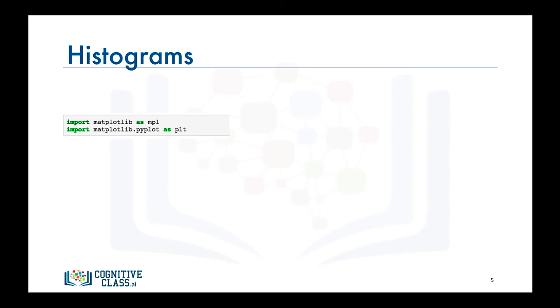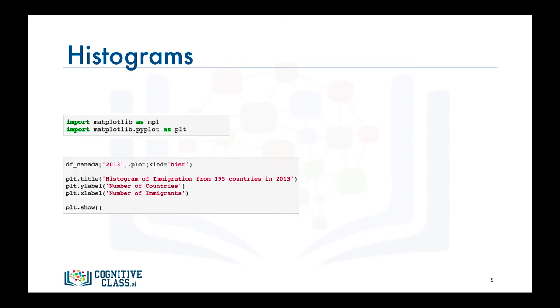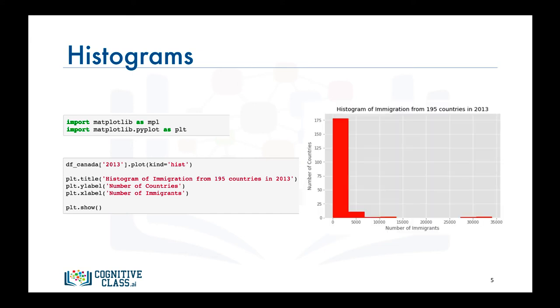And let's see how we can do that with matplotlib. First we import matplotlib as MPL and its scripting interface as PLT. Then we call the plot function on the data in column 2013 and we set kind equals hist to generate a histogram. Then to complete the figure we give it a title and we label its axes. Finally we call the show function to display the figure. And there you have it, a histogram that depicts the distribution of immigration to Canada in 2013.